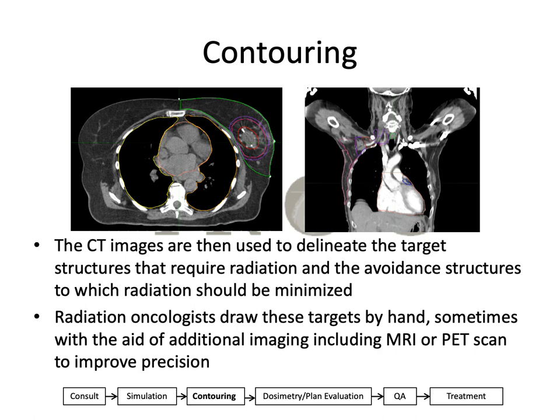The scan from simulation is then sent to dosimetry where it's uploaded for contouring. The radiation oncologist will then delineate the target structures that require radiation, such as the GTV, CTV, and PTV. Here you can see on the left, an axial slice of a breast plan scan with a lumpectomy cavity and some target structures drawn. You'll also delineate avoidance structures or organs at risk to which radiation should be minimized — here you can see the heart as well as both lungs contoured.